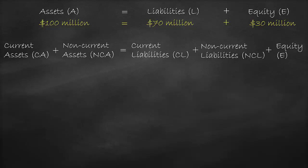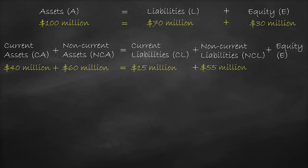Based on our example, let's say we have $40 million of current assets and $60 million of non-current assets, which gives us total assets of $100 million. This is equal to $15 million of current liabilities and $55 million of non-current liabilities and $30 million of equity, which gives us total liabilities and equity of $100 million.